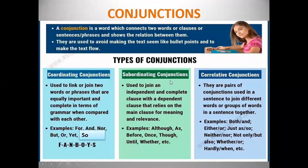Subordinating conjunctions are used to join an independent and complete clause with a dependent clause that relies on the main clause for meaning and relevance — meaning the first clause is independent and complete, while the second depends on the main clause. Some subordinating conjunctions include: although, as, before, once, though, until, whether, and so on.